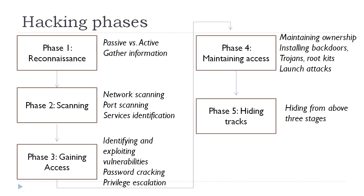Phase four and phase five are the post-exploitation phases. Once a hacker exploits any system and his objective is achieved, he never leaves the accessed system as it is. He will try to place some backdoors, trojans, or rootkits so that he can again access the same target system in the future. For that, he will try to hide the tracks — how he entered into the target system.